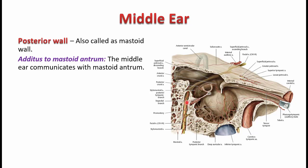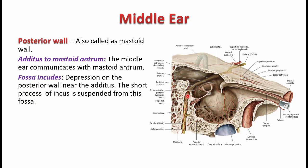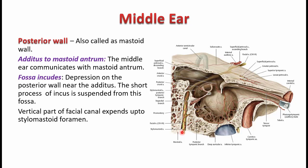Another feature on the posterior wall is the vertical part of the facial canal. You will be able to see the vertical part of the facial canal, inside which the facial nerve descends up to the stylomastoid foramen, through which the facial nerve emerges out of the skull. The facial canal has both a vertical part and an oblique part.